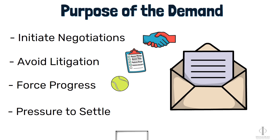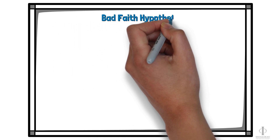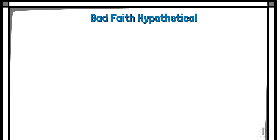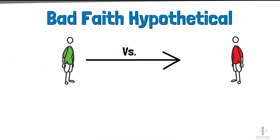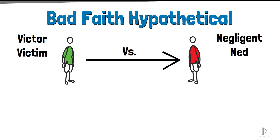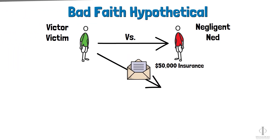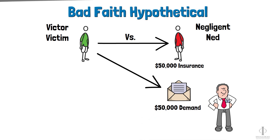This is important in the context of a bad faith claim. So let's talk about bad faith for a minute using a hypothetical situation, so you can understand how a demand might put pressure on the other side to settle a case. Let's say Victor Victim sues Negligent Ned after a car accident. Let's say Ned has bodily injury coverage to the tune of $50,000. Now, let's say we send a demand to the insurance company on Victor's behalf for $50,000, which is within policy limits. Then let's say Ned's insurance company refuses to settle the case within policy limits.